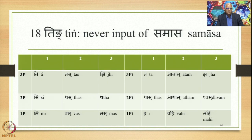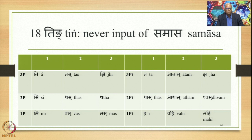These 18 ting suffixes are divided into two groups of nine, which is further divided into three columns and three rows. Each row indicates the person and the column indicates the number. The left-hand side nine suffixes are: Te, Tas, Jhi, Si, Tas, Tha, Mi, Vas, and Mas. These are the suffixes which are part of these 18 suffixes.